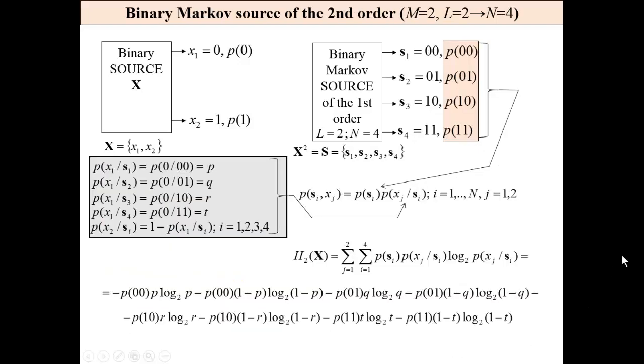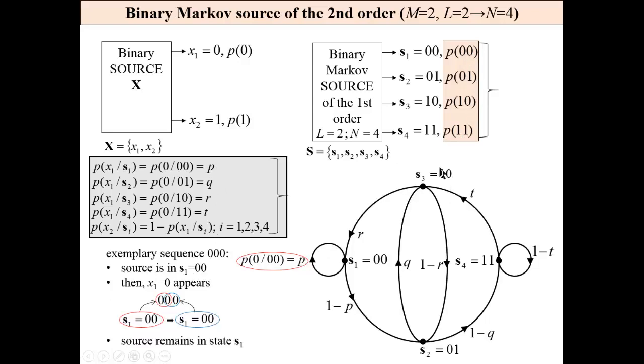For binary source of the second order, we have four states and eight conditional probabilities. This is a graphical model of these conditional probabilities.